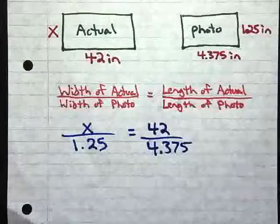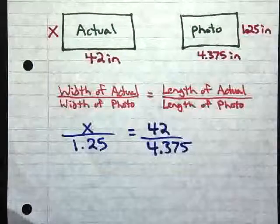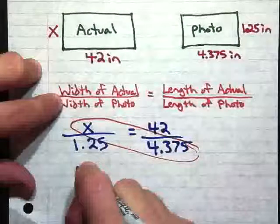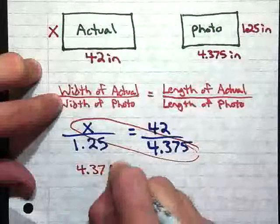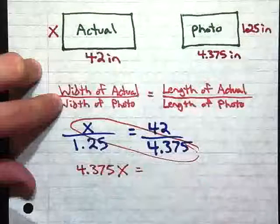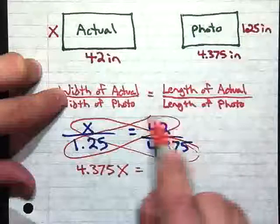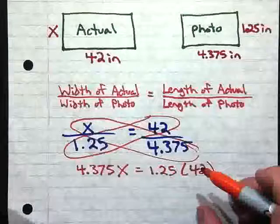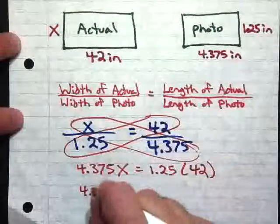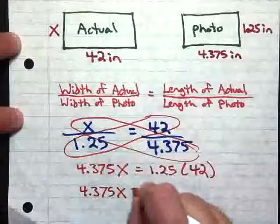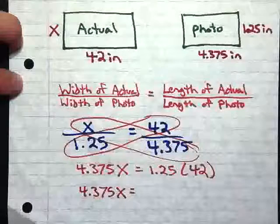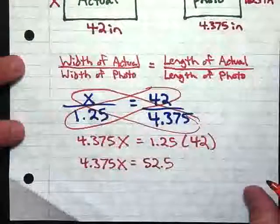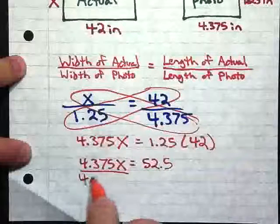And at this point, I have my proportion. Now I can solve my proportion. So we're going to cross multiply. So when we do that, we get X times 4.375, which gives us 4.375X equals our other cross-product, which is 1.25 times 42. And when I simplify this down, I get 4.375X equals 1.25 times 42, and I get 52.5.